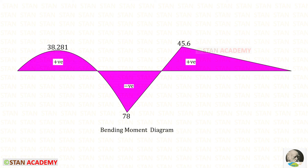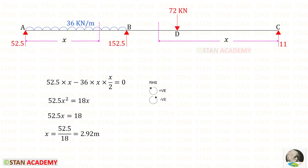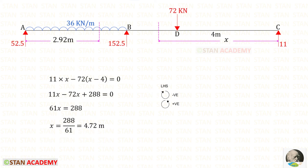Flipping this diagram upside down gives the bending moment diagram on the tension side. At two points the bending moment becomes zero — these are the points of contraflexure. We make sections at these two points to find their distances. In span AB, a section at distance x from A gives us the first distance. In span BC, a section at distance x from C gives the second distance as 4.72 meters.